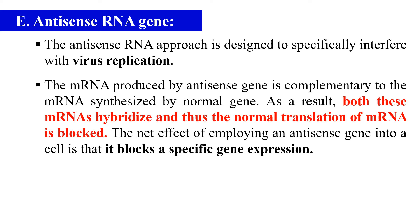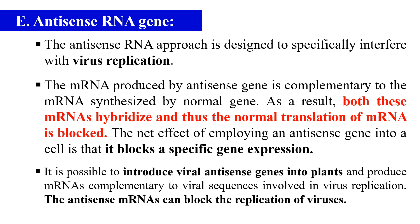As the translation is blocked, there will be no formation of viral proteins, no growth of virus, and no disease symptoms. By using this antisense RNA gene we can develop the virus resistance plant. The technique is simple: we introduce the viral antisense genes into plants, which make complementary RNAs to the viral sequence, and these complementary RNAs bind to the messenger RNA of the virus and block their translation.